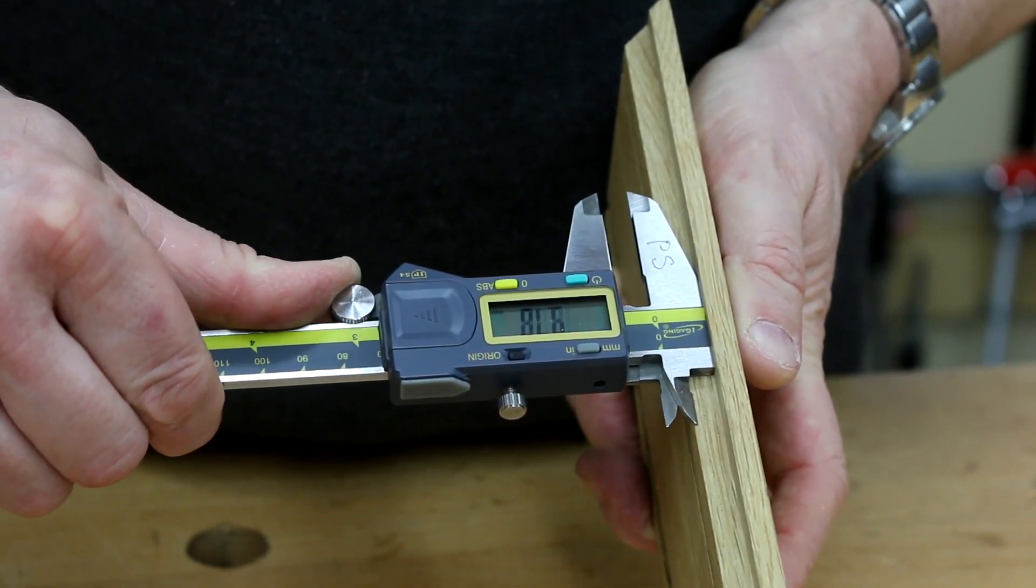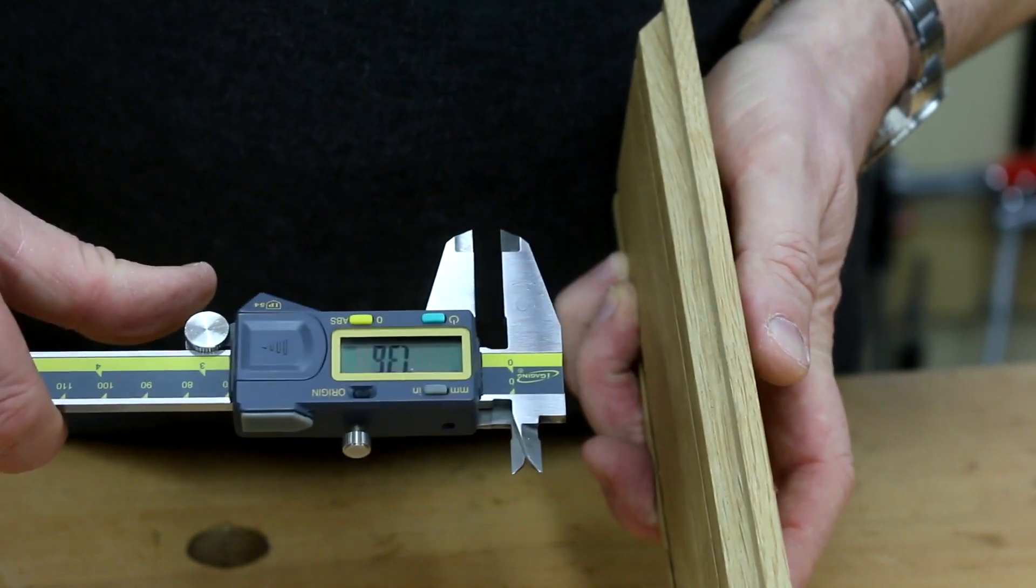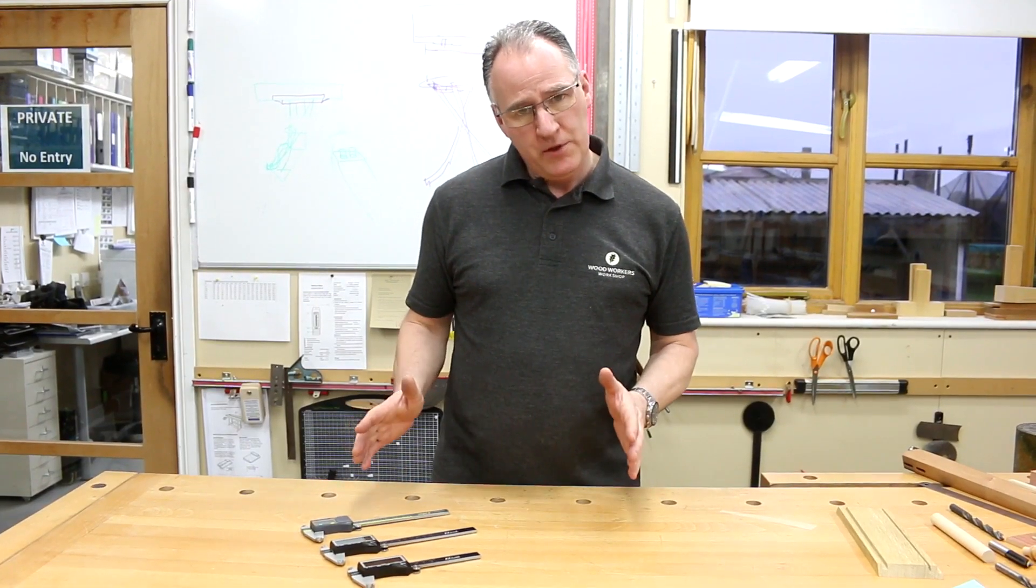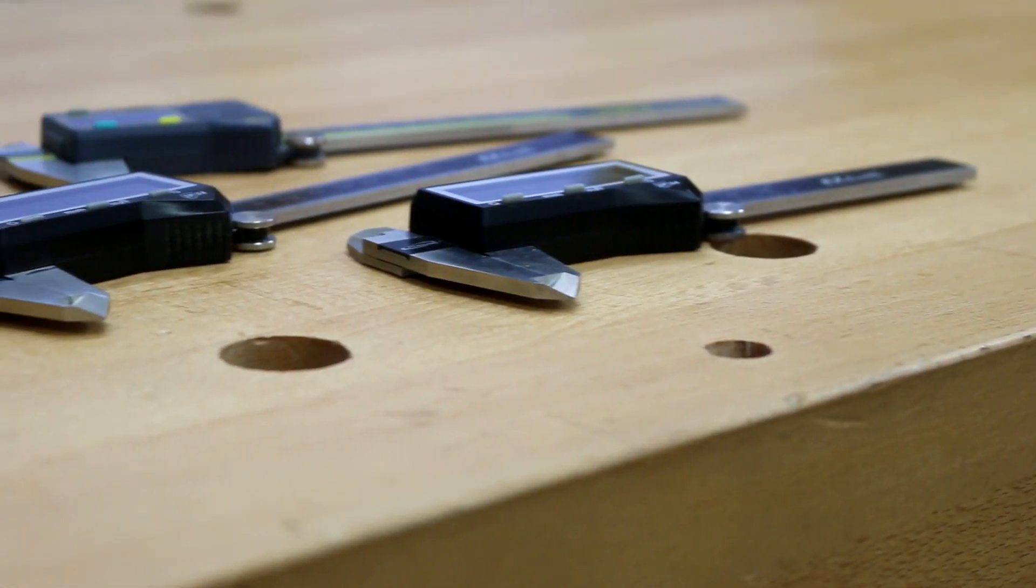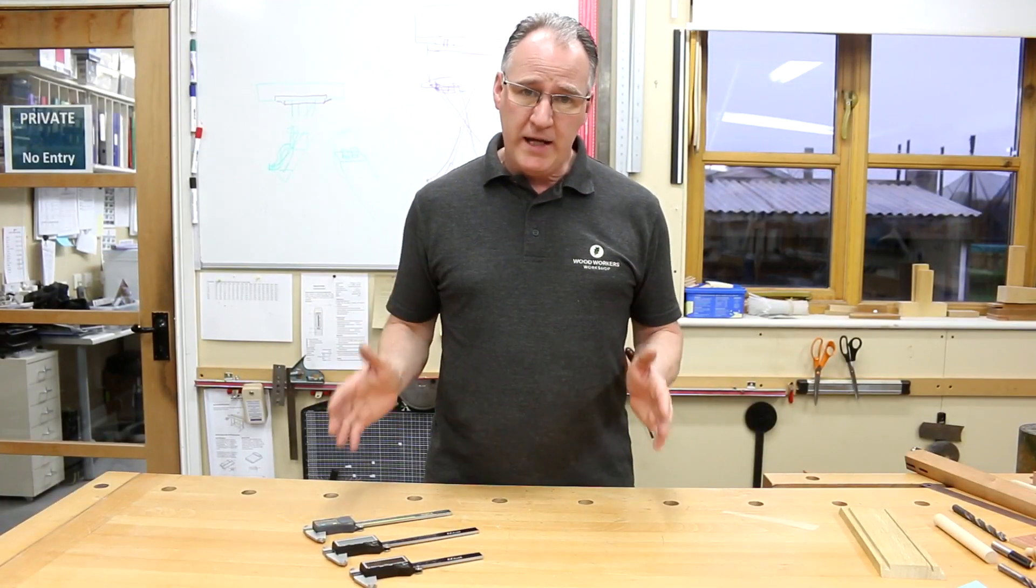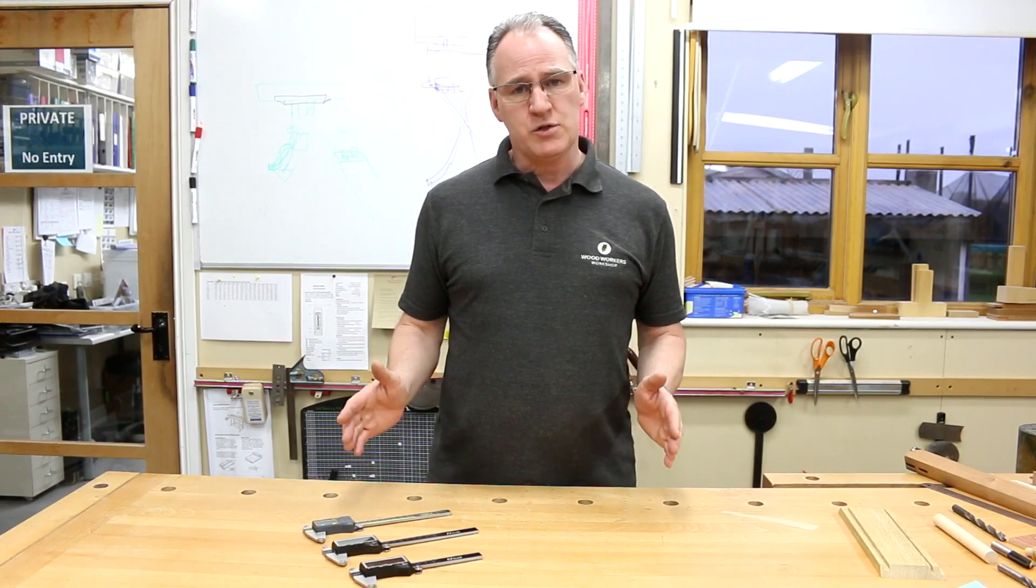The iGaging digital calipers are available from Woodworkers Workshop online. So if you want to get those in the UK or Europe, check out in the description below for links to our website.